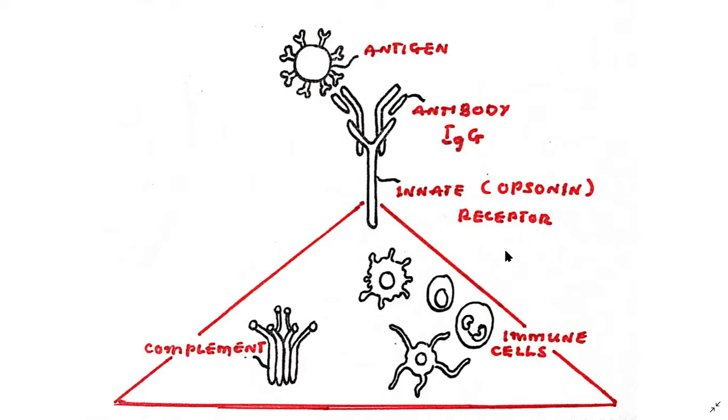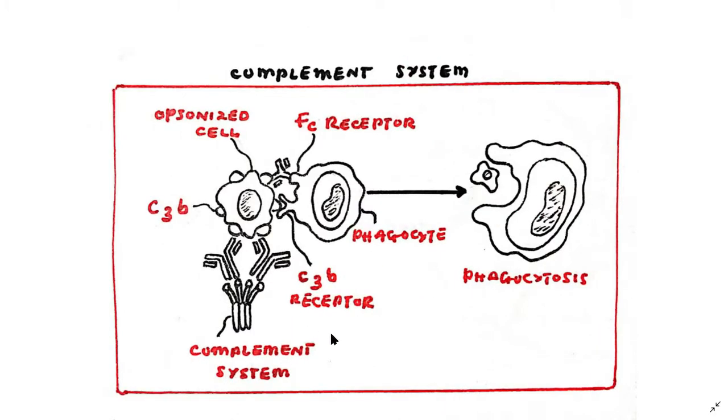The immune system coats potential threats with antibodies so that other cells would recognize them and destroy them. The immune system can also use something called the complement system, which is basically a group of proteins used to tag the bacteria. So the complement system is another way for the immune system to destroy pathogens and threats to the host.